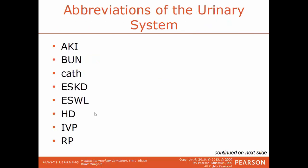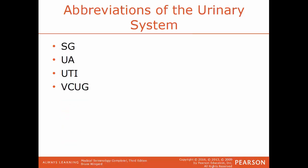Now we'll talk about some common abbreviations of the urinary system: AKI — acute kidney injury; BUN — blood urea nitrogen; CAF — catheter; ESKD — end stage kidney disease; ESWL — extracorporeal shockwave lithotripsy; HD — hemodialysis; IVP — intravenous pyelogram; RP — retrograde pyelogram; SG — specific gravity; UA — urinalysis; UTI — urinary tract infection; and VCUG — voiding cystourethrogram.